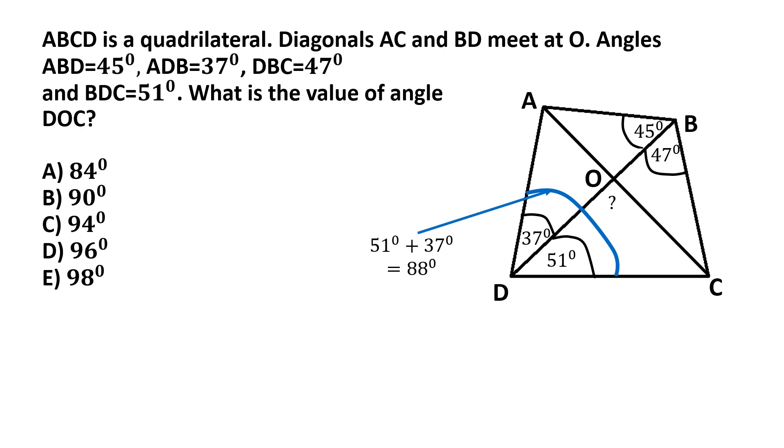And similarly on the other side, if you take the sum of those two angles, namely angle ABD and angle DBC, you get angle ABC which is the other angle of the quadrilateral. That's marked in orange and that will come to 45 plus 47 equal to 92 degrees.